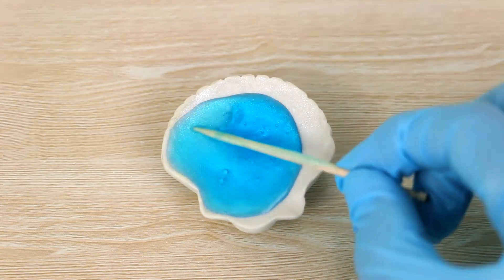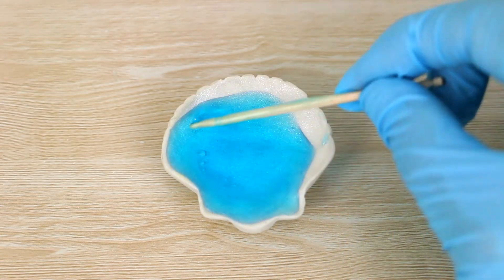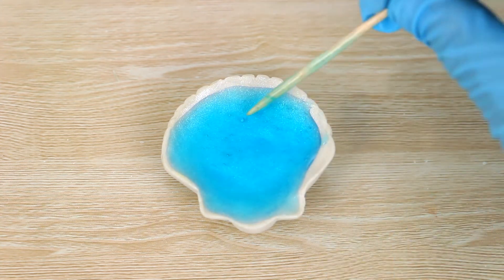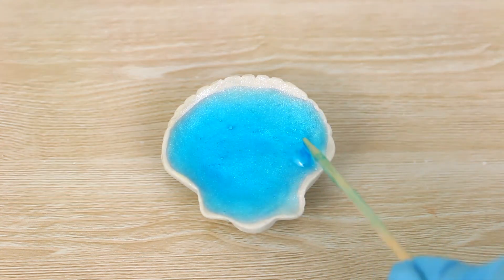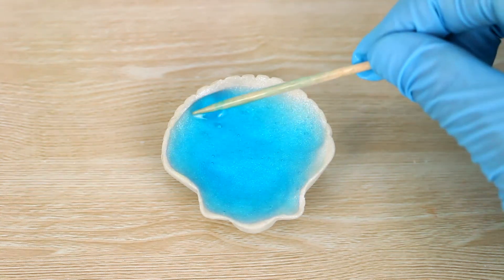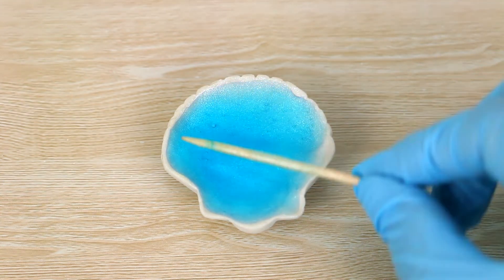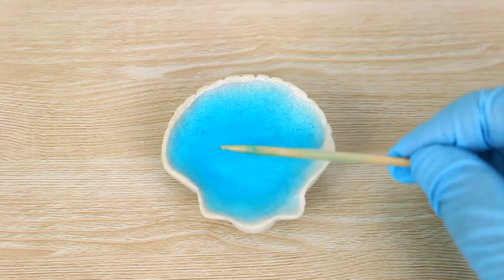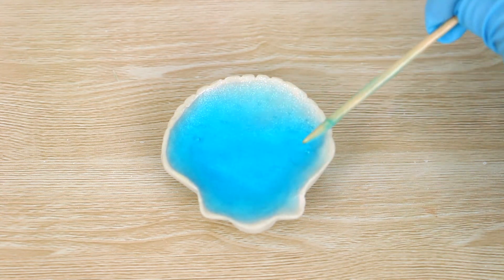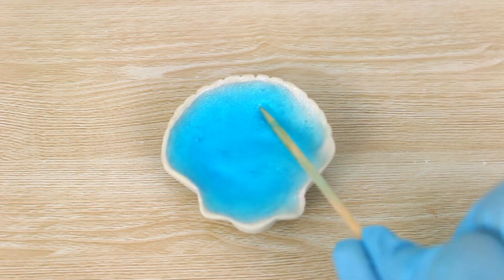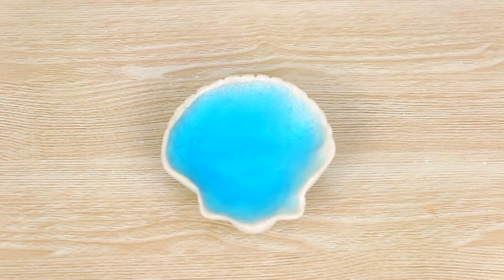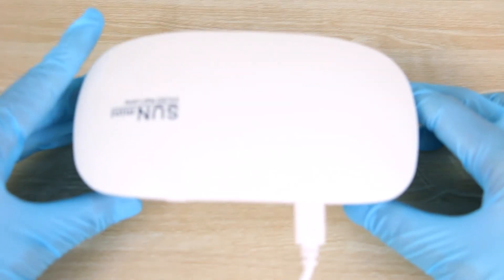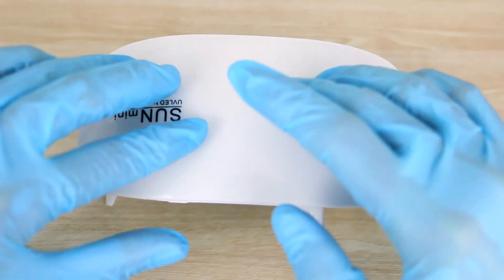Then I'm just going to spread it all the way around the shell with a toothpick, and then set it using my UV lamp. Usually I would take it outside and cure it in the sun, but because I'm most likely to spill it, I'm just going to cure it inside under the lamp.